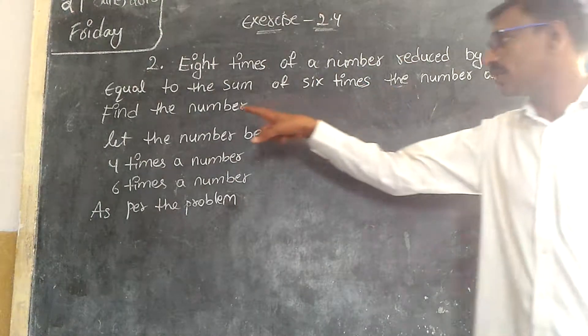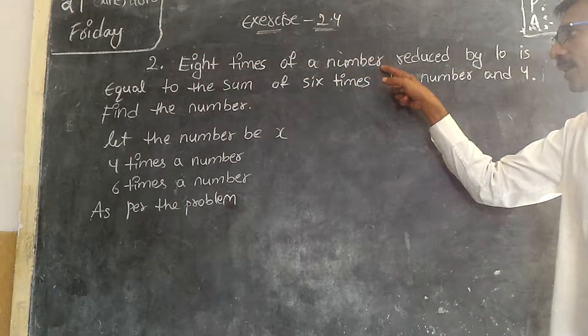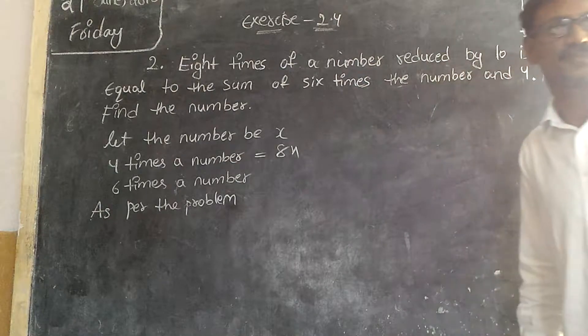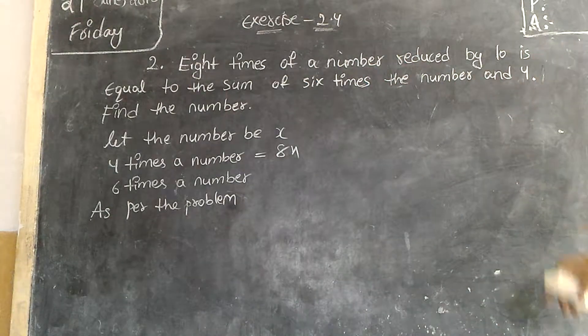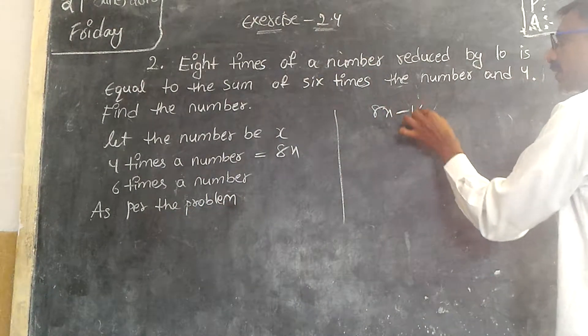So let the number be x. Eight times of a number is 8x. It is reduced by 10. So as per the problem, 8x minus 10.